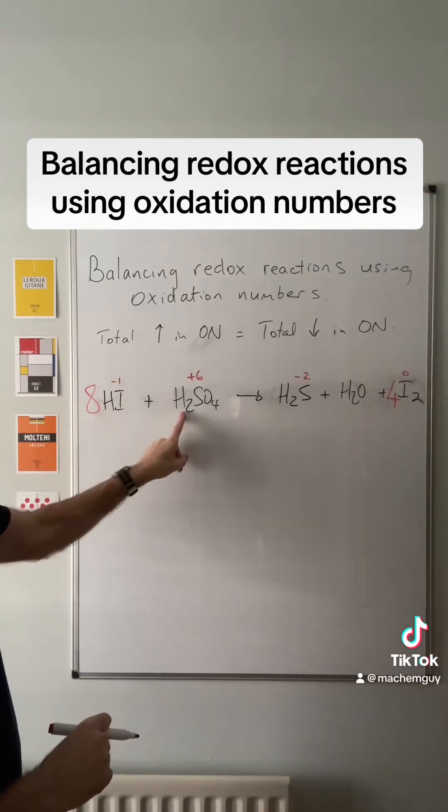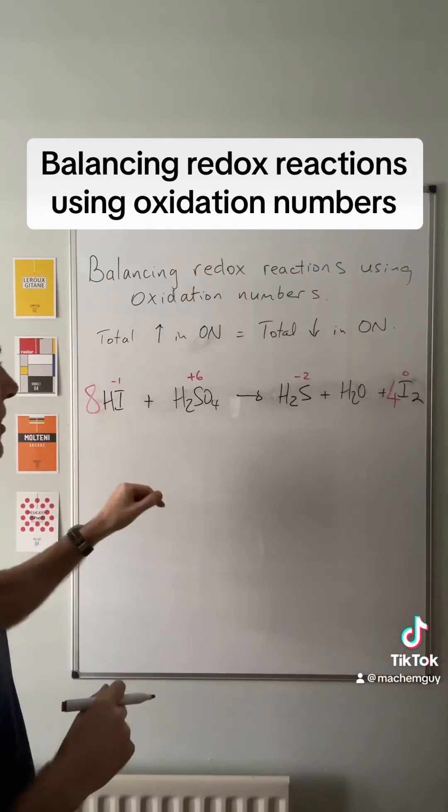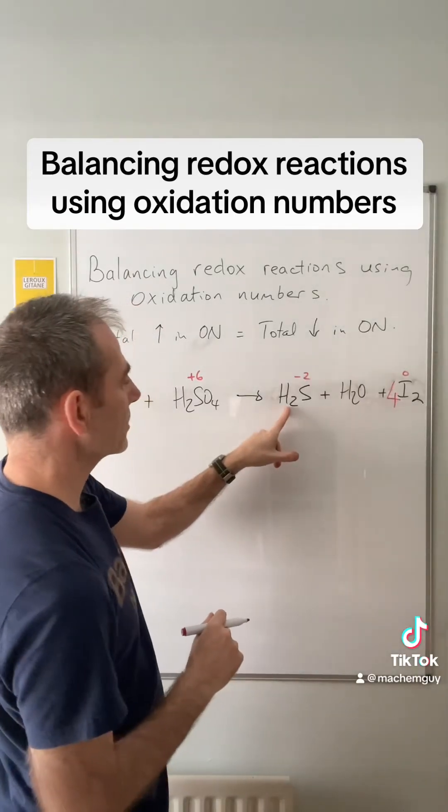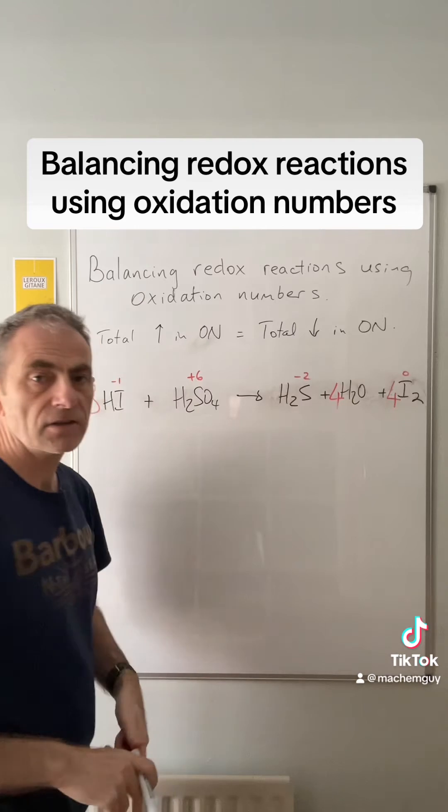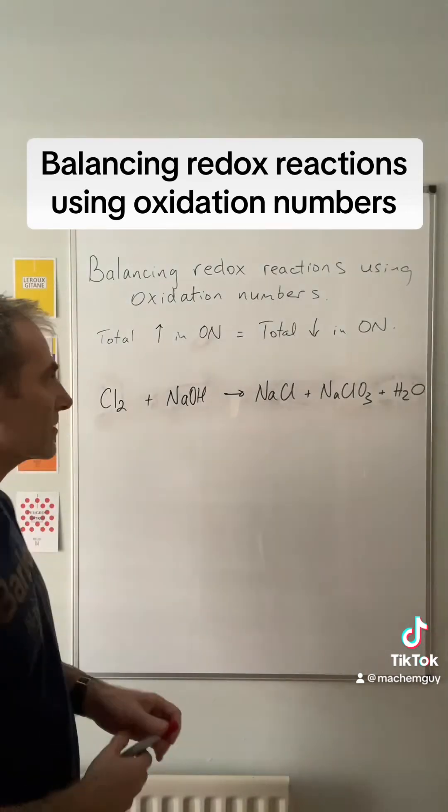We just need to look at the H2O. So we've got eight H's there and another two there, so we've got ten H's on the left, we've got two there, so we need another eight. So we need a four in front of the H2O. That was that one.